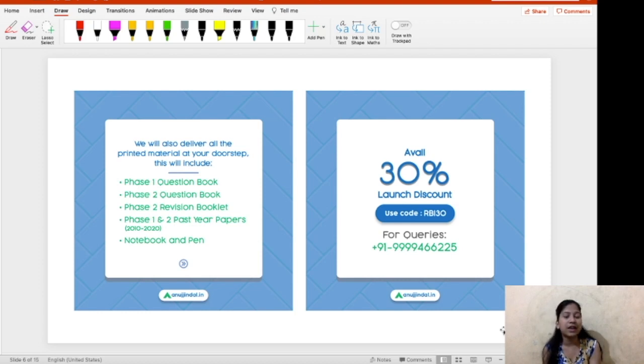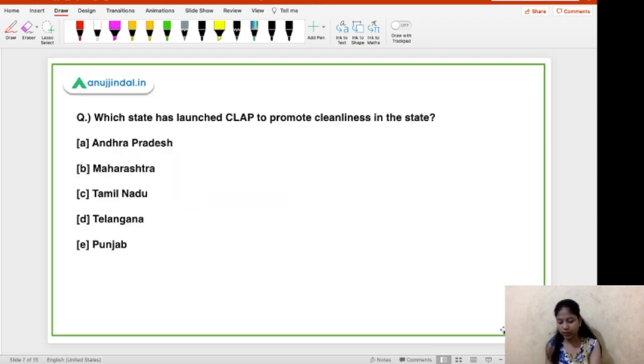Apart from this, the bonus here is that we are running a 30% discount on this course. So if you want to avail this discount, then you can use the coupon code RBI30. And in case you have any queries, then you can call us on the number right in front of you. So that was the introduction guys. Still, if you have any kind of doubts, you can call us on this number.